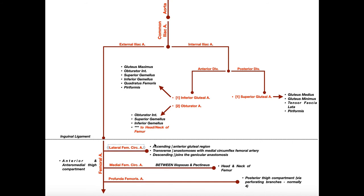For the lateral femoral circumflex artery, this one has three parts: an ascending part, a transverse part, and a descending part. The ascending part supplies blood to the anterior gluteal region. The transverse part actually anastomoses with the medial circumflex femoral artery, connecting up with that artery. The descending part joins with the genicular anastomosis, which we'll cover in the next video. The genicular anastomosis is a network of blood vessels in the knee that provides alternate flow for blood whenever the knee is in extreme flexion — for example, when you compress the femoral artery by bending the knee maximally.